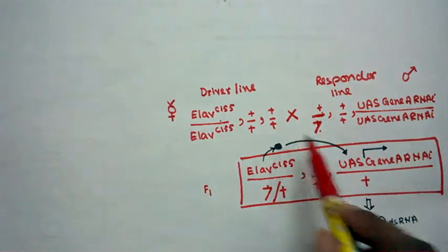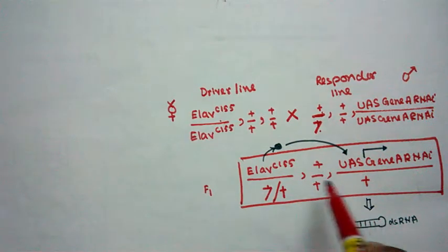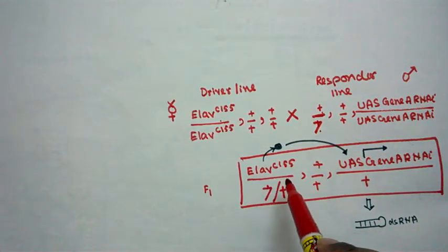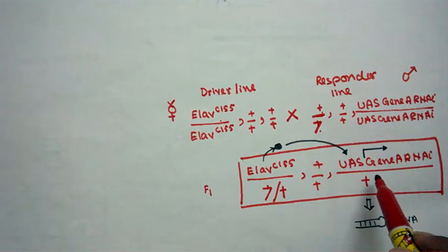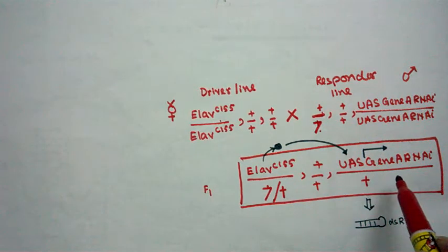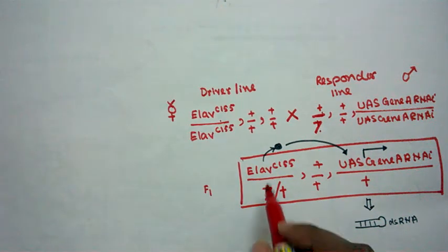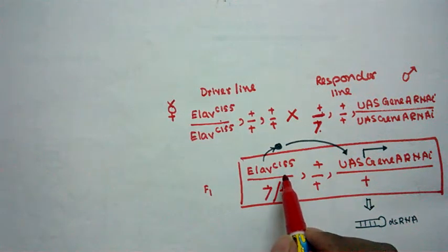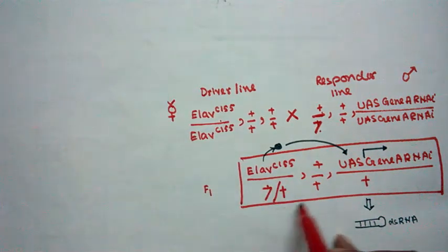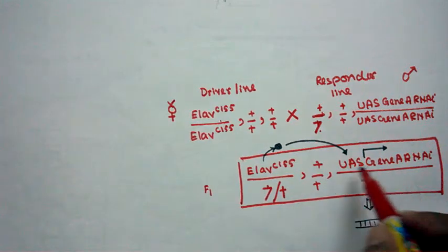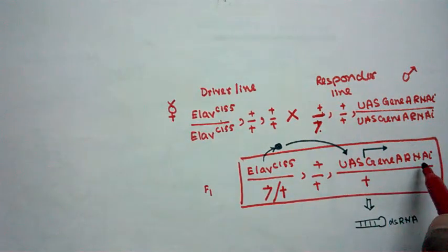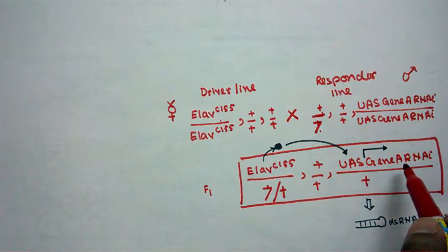But when we combine these two by crossing them in one particular fly, we have both GAL4 and the RNAi. That is why knockdown would be happening in the F1 fly. Now question comes: where would the knockdown be happening and how the tissue-specific knockdown would be happening? ELAV-C155 is a neuron-specific driver. So ELAV-C155 would be expressed only in the neurons of this particular fly.